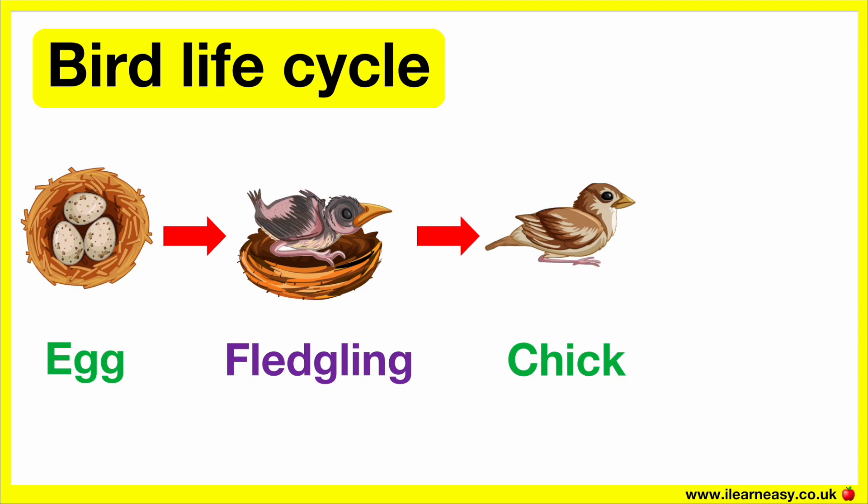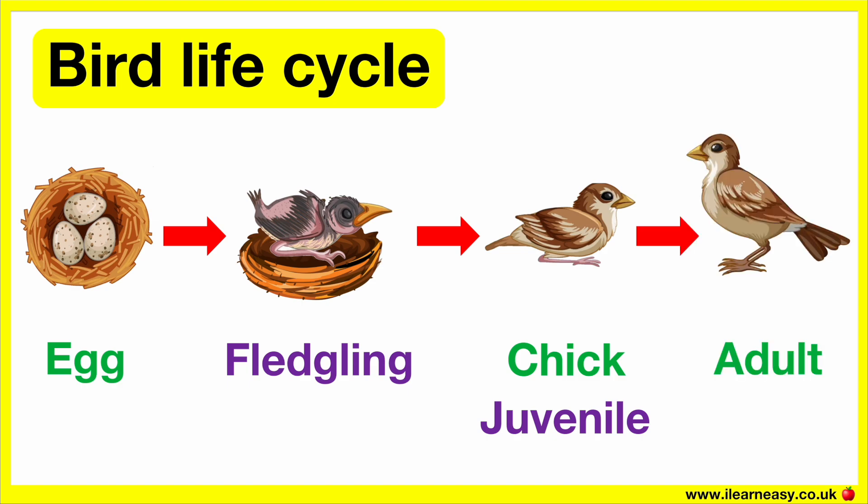The chick will begin to explore the outside world, and over time, it will become independent as it learns to fly and find food for itself. In this stage, it's known as a juvenile. As the chick grows into an adult, its features will change and it will be able to reproduce by laying eggs to repeat this cycle.